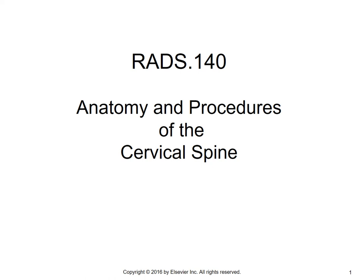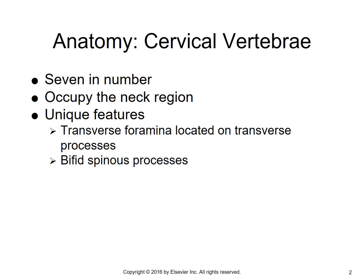Hello everyone. Today we're going to cover the anatomy and procedures involving the cervical spine. First, a quick recap on the anatomy of the cervical vertebrae. There are seven in number, they occupy the neck region, and they have some unique features: transverse foramina located on the transverse processes for protection of the vertebral artery, and bifid spinous processes.